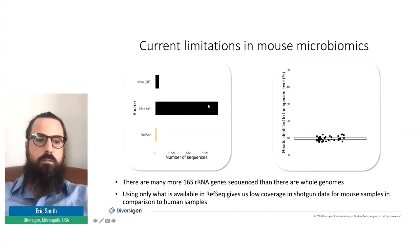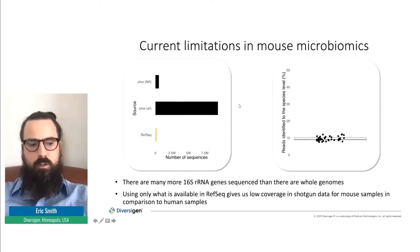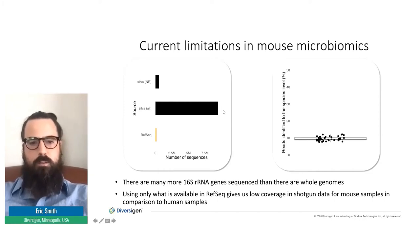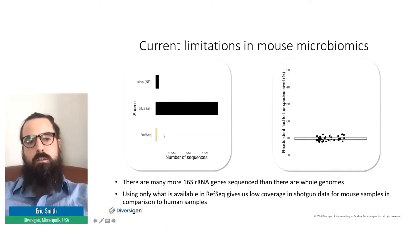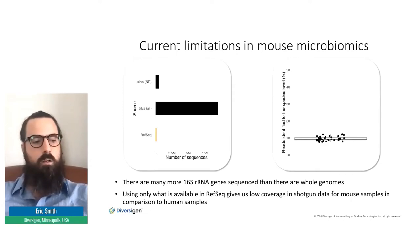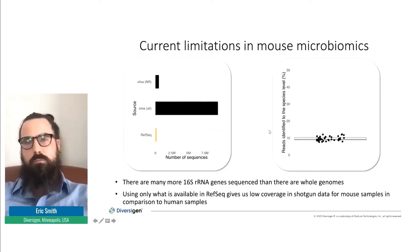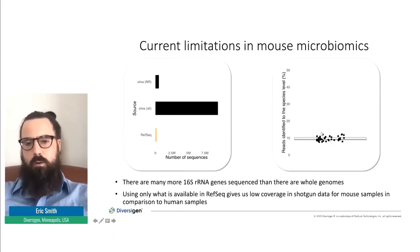This is reflected in the number of 16S sequences available versus the number of whole genomes available. The Silva database, which is a 16S repository, has a little over 9 million 16S sequences, and even after dereplication you still have over 500,000. By contrast, the RefSeq database has right around 200,000 full genomes — about 40% of what we see in 16S representation. And when we map reads from mouse fecal samples to RefSeq, the proportion of reads unambiguously identified to the species level is right around 10%. Pretty abysmal.